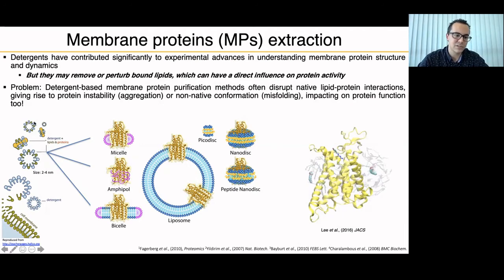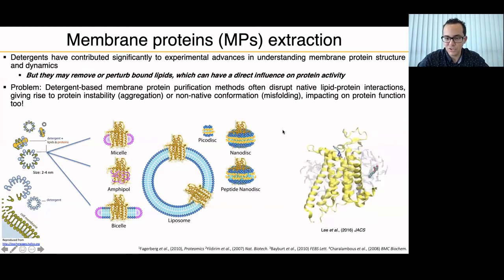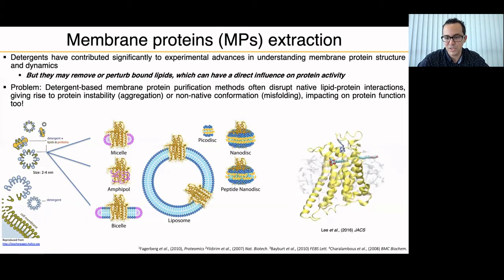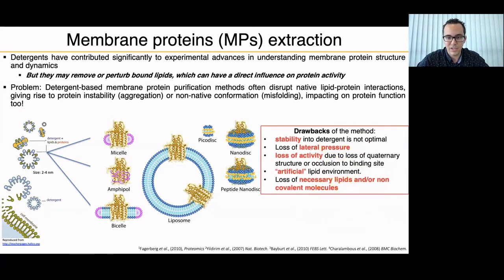This has the consequence of spending a lot of time and money to find the correct detergent to extract the protein in its correct fold state, impacting protein function. I have a quick video just to show you how an OG detergent molecule intercalates in between the alpha helices of a GPCR and starts to unfold it. So the big question is: why should we use detergent?